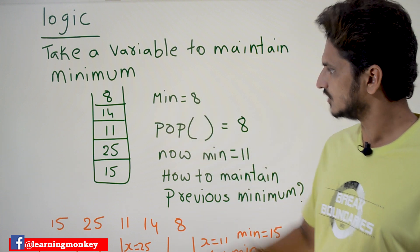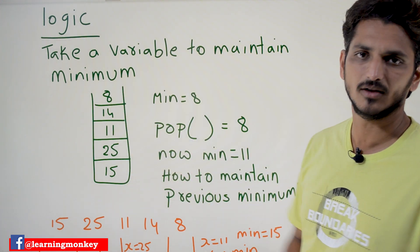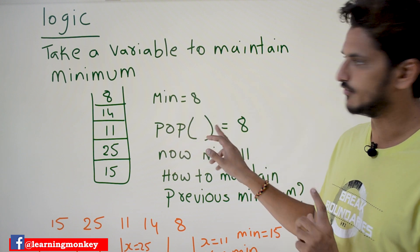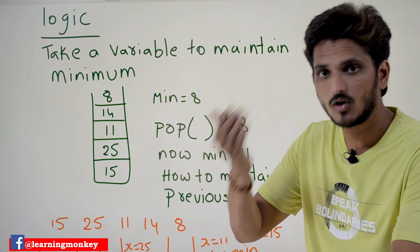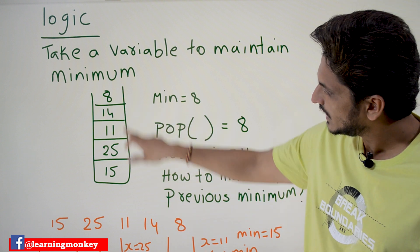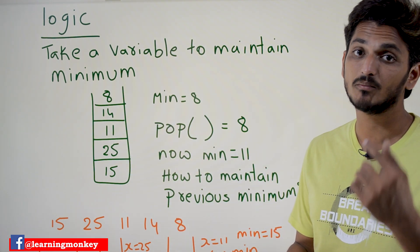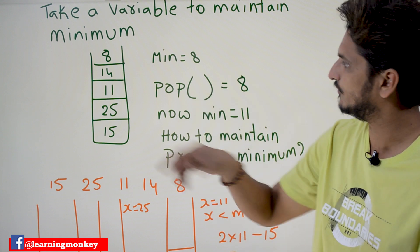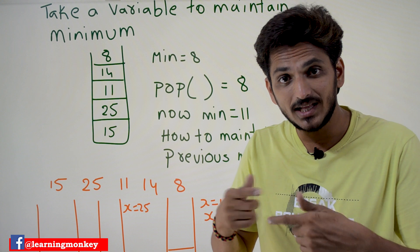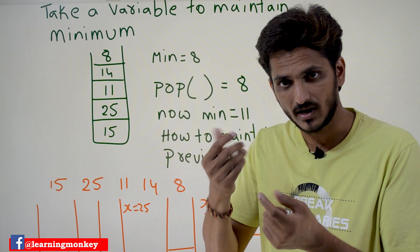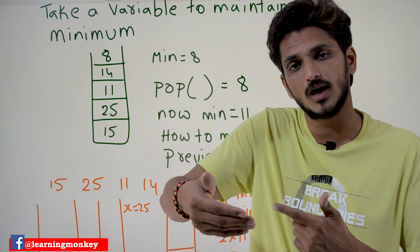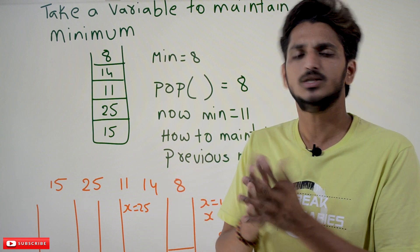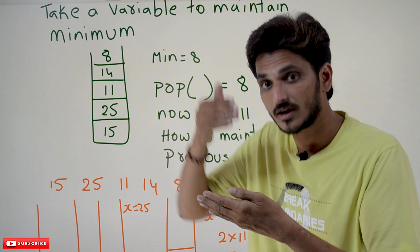Min is equal to 8. In the stack 15, 25, 11, 14, 18 — what is the minimum element? Now if someone applies the pop operation, the topmost element is 8. When you take out 8, what is the minimum element in the remaining stack? 11 is the minimum element. Now min is equal to 11. How to maintain the previous minimum? Whenever you pop 8, you need to keep on maintaining the previous minimum element. How to keep track of that previous minimum element?